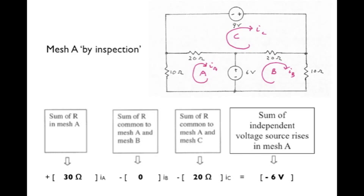What goes on the right-hand side is the sum of the independent voltage sources in this mesh, using a clockwise direction. And in this case, that's going to be minus 6 volts. And with that, we have the same equation we obtained earlier in the lesson using KVL and element constraints, except this time we wrote it in just one line by inspection using the algorithm shown.